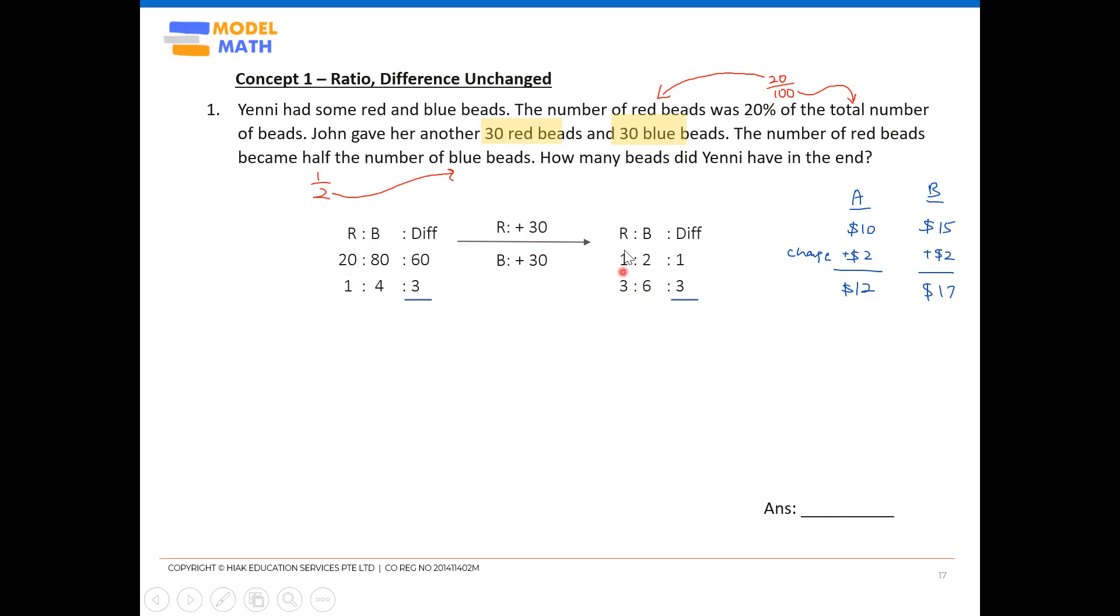You see red at first is one unit. Red here shows three units in the end. Always use the newest units. Don't look at the 1:4 here, look at the below one: 1 here, 3 here. So the change is an increase of two units, 3 minus 1, which means these two units represents this 30 red beads. So two units equals to 30.